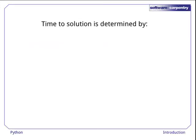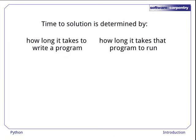Whenever you're programming, the total time to get a solution is determined by how long it takes to write a program, and how long it takes that program to run. The first is human time — the time to get a correct program running is primarily determined by how fast you can think. The second is machine time: the faster the computer, the faster you'll have your answer.